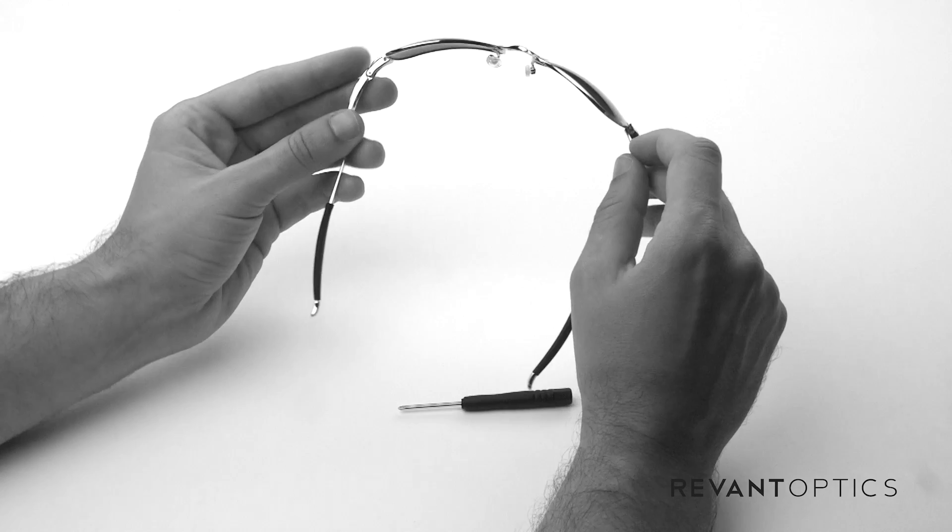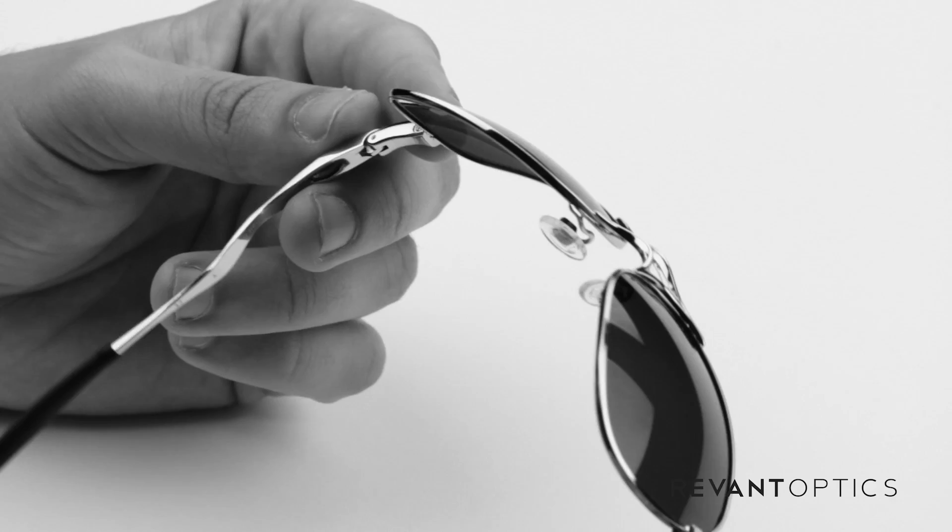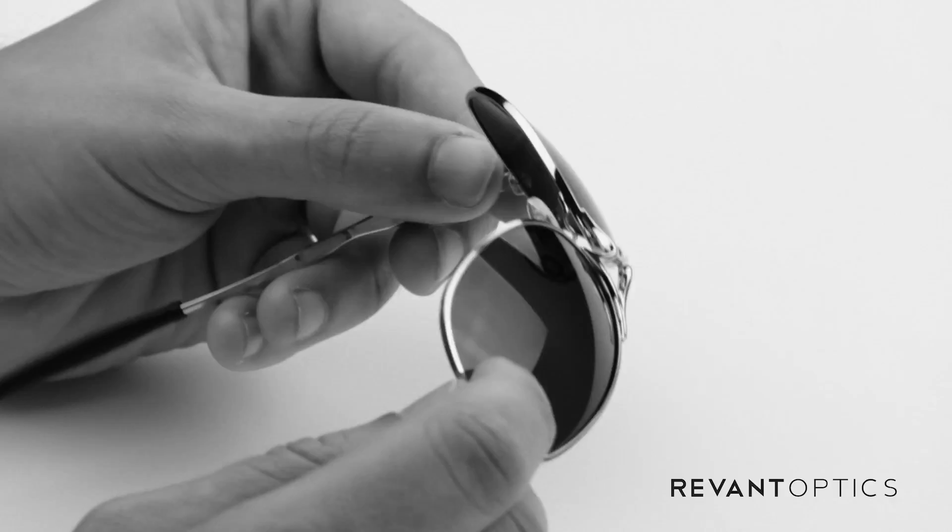So the Crosshair S has two screws that can be found here and here, where the temple meets the front of the frame. And those are actually what you need to remove to remove the lenses.